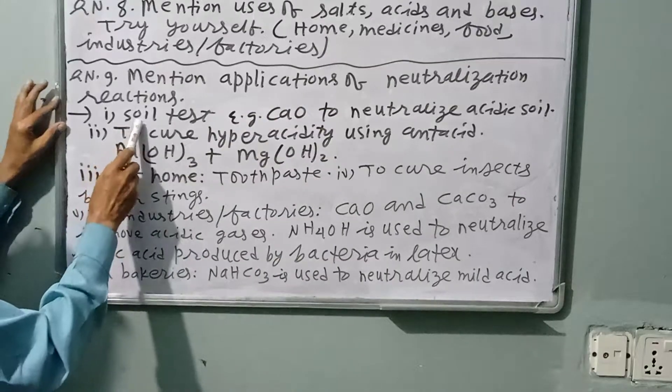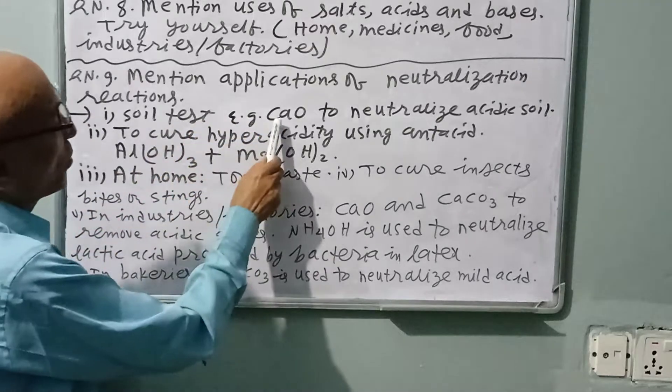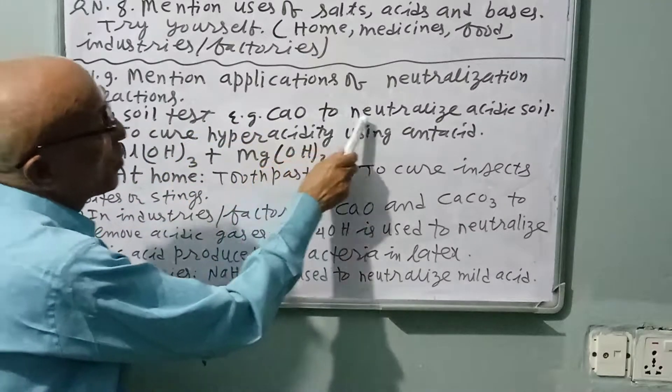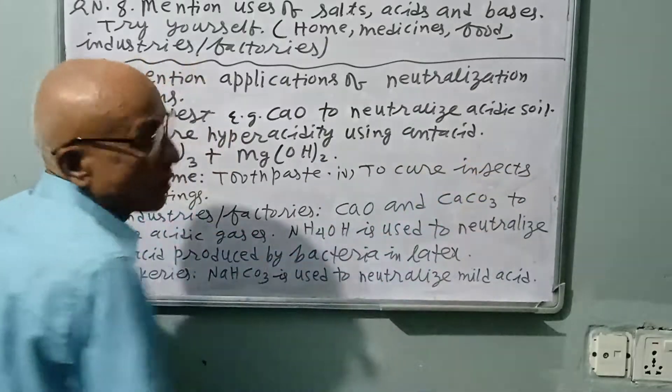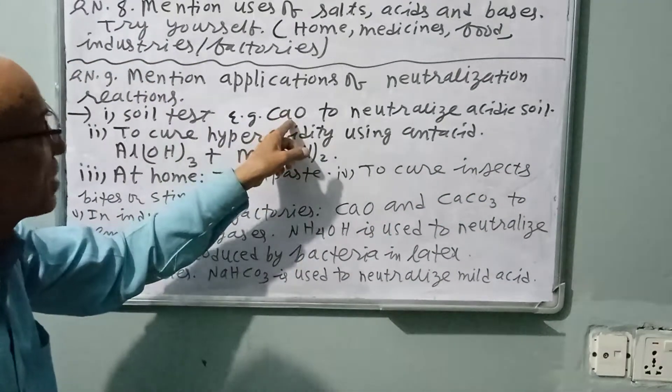Number one: Soil test. Calcium oxide (CaO) is used to neutralize acidic soil. If the soil is acidic, use base. If the soil is basic, use acid.